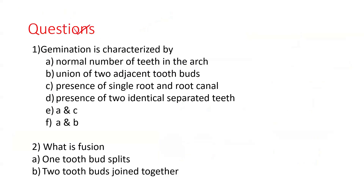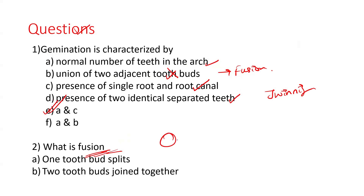Now for the questions. Gemination is characterized by which of the following? A normal number of teeth in the arch — yes, because it occurs from one tooth bud giving rise to incomplete formation of two teeth. Union of adjacent tooth buds — no, that is fusion. Presence of a single root and root canal — yes. Presence of two identical separated teeth — no, that is twinning. So the correct answer is A and C. For 'what is fusion?' — two tooth buds come together, so the correct answer is B.